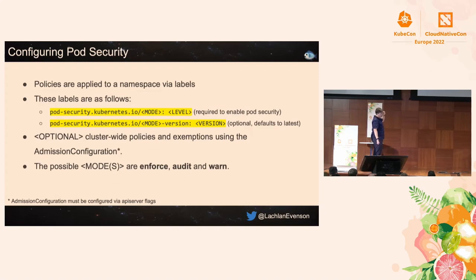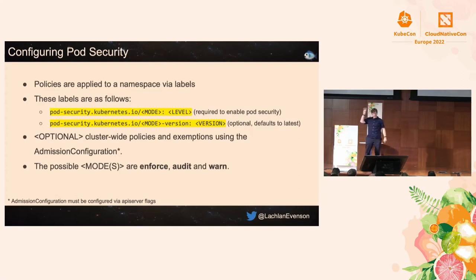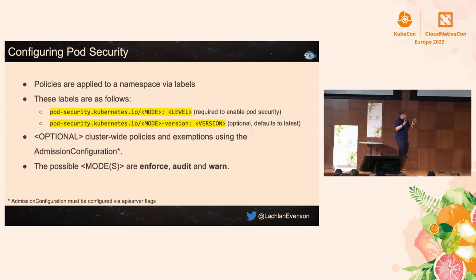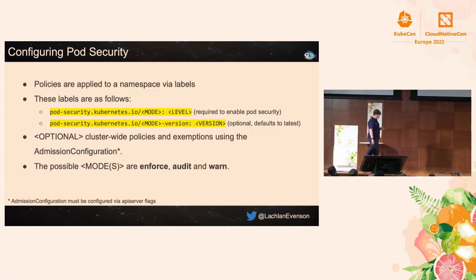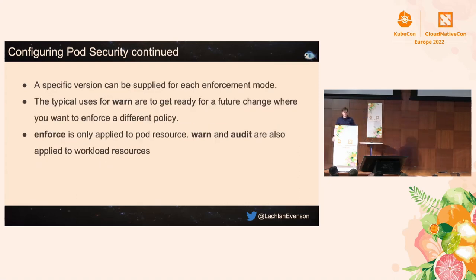Configuring pod security uses two labels applied to a namespace. The first is pod-security.kubernetes.io/[mode], where the three modes are enforce, warn, and audit. The second label is for version pinning, which is completely optional. If you don't want users configuring labels on namespaces themselves, there is an admission configuration approach where you set a config file that the API server picks up, allowing regex-based namespace exclusions as well.